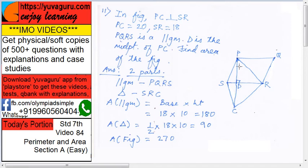There are two parts in this figure: one is parallelogram PQRS and second is triangle SCR, whatever you can call it.